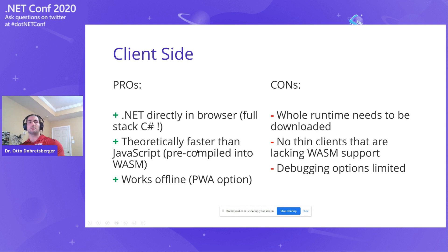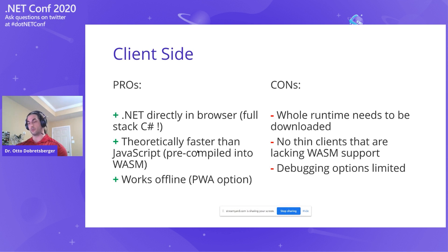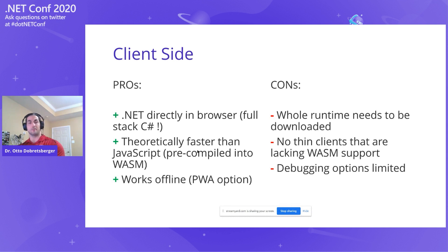The pros and cons for client-side Blazor apps — on the pro side, .NET can run directly in the browser. That is the first time you can do full-stack C# development for web apps, which is probably one of the biggest advantages. For me personally, the third bullet point is one of the biggest advantages as well: it works offline, so you can deploy your client-side Blazor app as a PWA, a progressive web app.